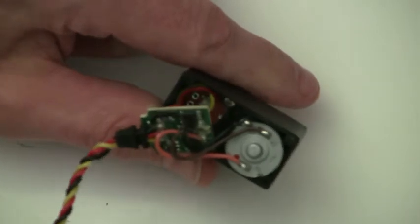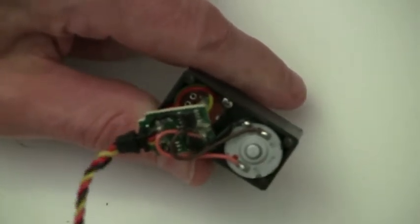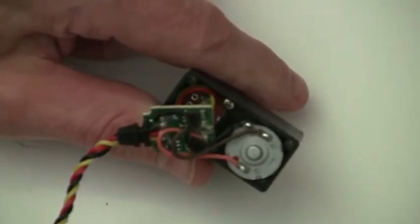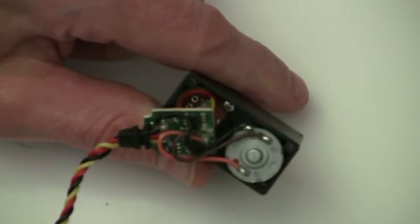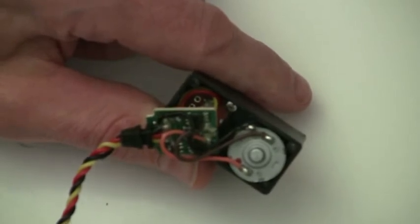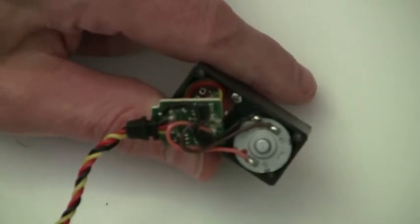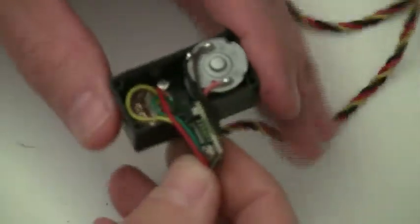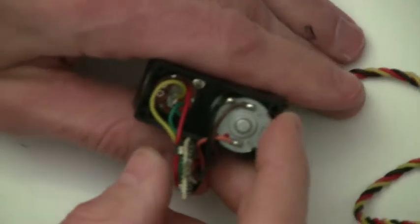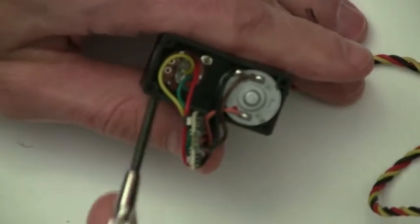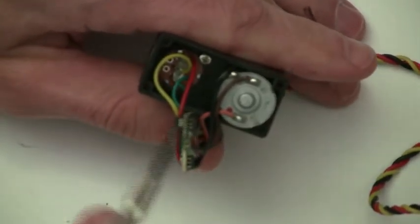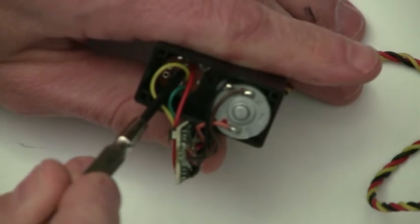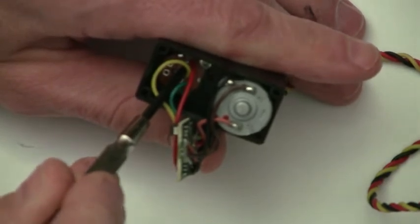The positional servo has two major components. There, of course, is going to be the motor, but there needs to be some way for it to determine if it is in the right position or not. So there needs to be some feedback. That is done typically through a potentiometer. So in this particular positional servo, again we have the motor, but we have in here a rotary potentiometer. That's our feedback device.